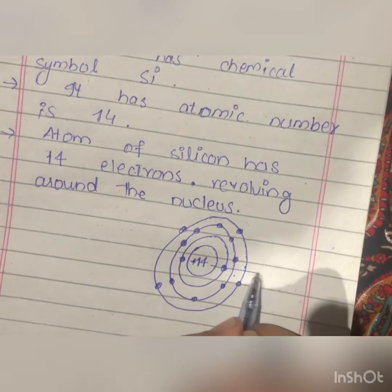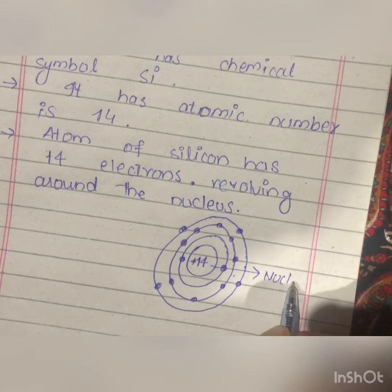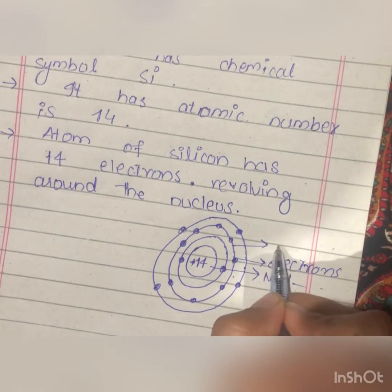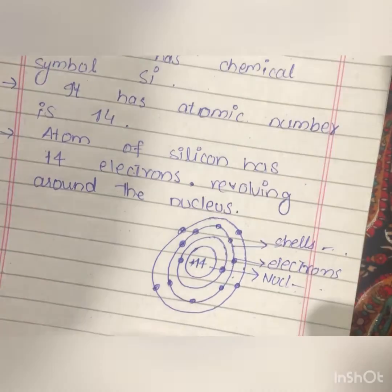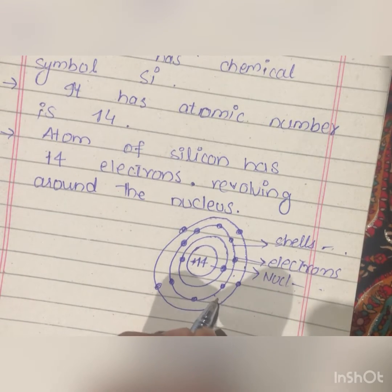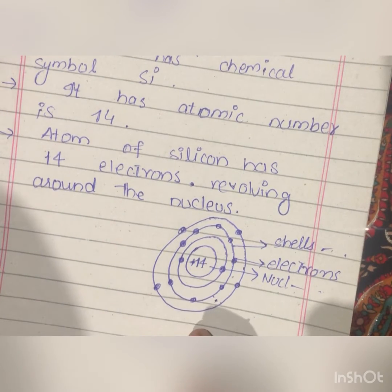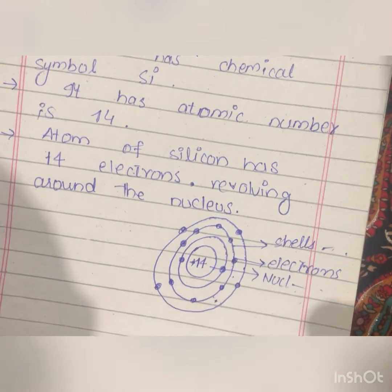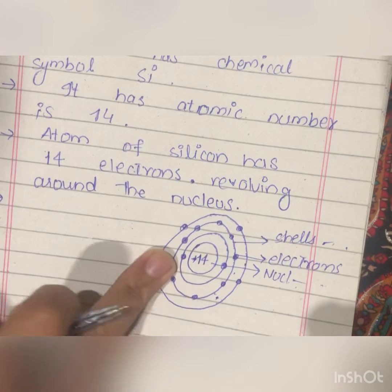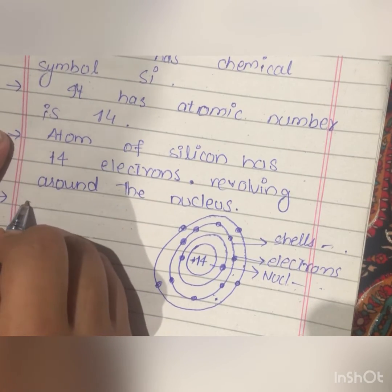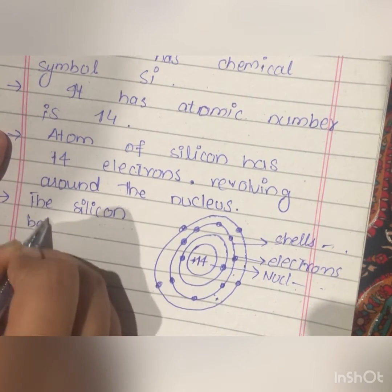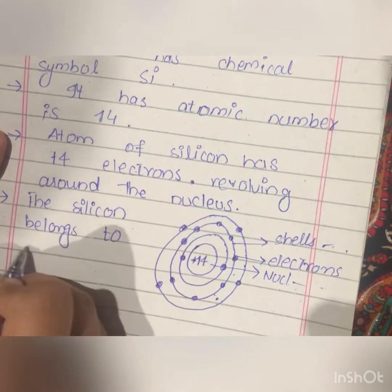This is the nucleus with its electrons in shells. The gap between these shells we call the forbidden energy gap. Silicon belongs to the 4th group.